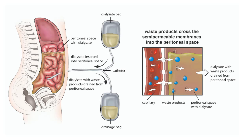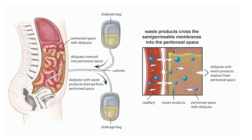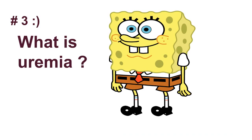The dialysate with waste products is then drained from the peritoneal space into the drainage bag. This is the capillary carrying the blood. Waste products cross the semipermeable membrane into the peritoneal space, and the dialysate with waste products is drained from the peritoneal space into the drainage bag. That is what peritoneal dialysis is.